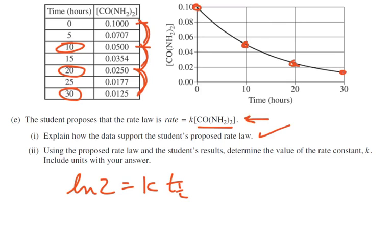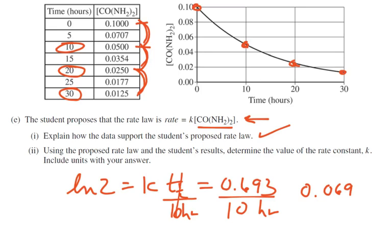And we know that the natural log of 2 is 0.693. So we know the half-life is 10 hours, and we know this number so we can solve for k. So we just take both sides, divide by 10 hours, and we get 0.693 divided by 10, and that's going to be 0.069. And it's hours to the minus 1.